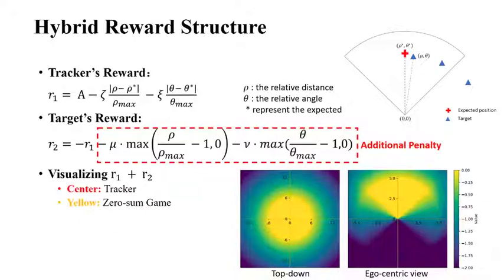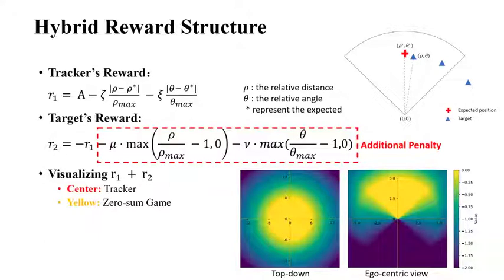The reinforcement learning rewards for the two parties: intuitively, the tracker obtains a high reward if it can lock the target at the center of its view and keep a constant distance. The target reward is more complex and has two zones.